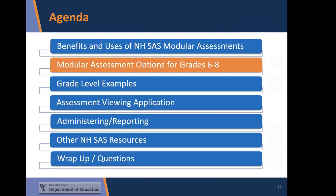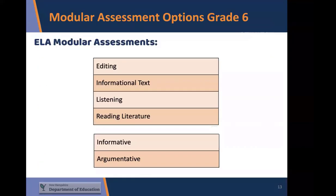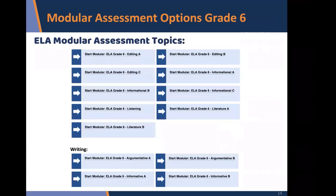Now let's talk about the options available for grades six through eight. For grade six modular assessments, the domains available are editing, informational text, listening, and reading literature for the reading portions, and informative and argumentative for writing. You have three editing options, three informational text options, one listening, two reading literature, two argumentative writing, and two informative writing options.